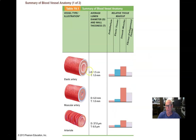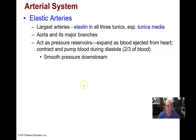Elastic arteries have a thick tunica media made up of a lot of elastic connective tissue. As we branch to smaller arteries, they become more and more muscular — more smooth muscle in the tunica media — and eventually come to very tiny arteries called arterioles, which give rise to blood capillaries.